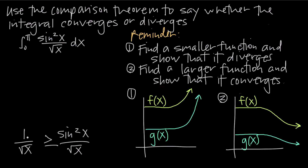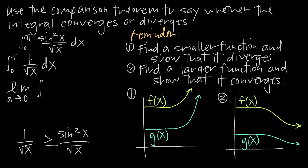So instead of taking the integral of the given function, we take the integral of the comparison function: the integral from 0 to pi of 1 over the square root of x dx. We want to figure out whether this integral converges or diverges. This is going to be an improper integral because this function is undefined at the left edge of the interval — at x = 0, the square root of 0 is 0, and 1 divided by 0 is undefined. So we take the limit as a approaches 0 of the integral from a to pi of 1 over the square root of x dx.